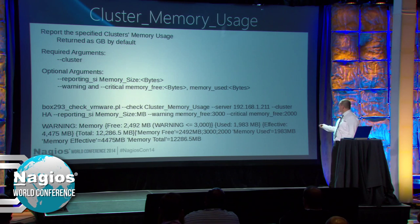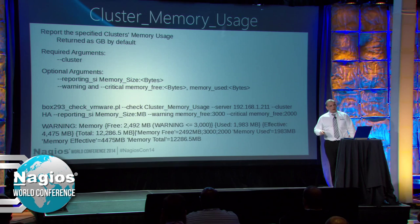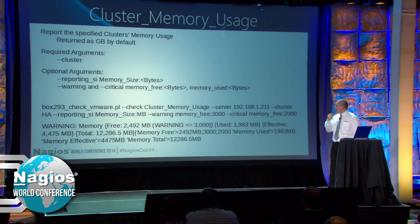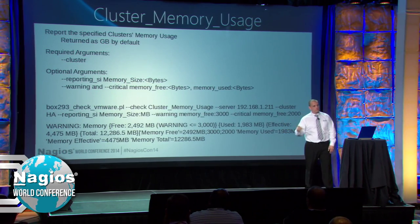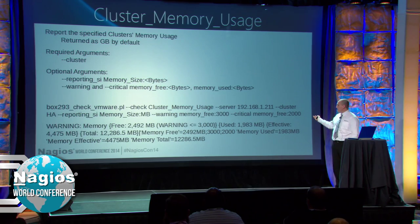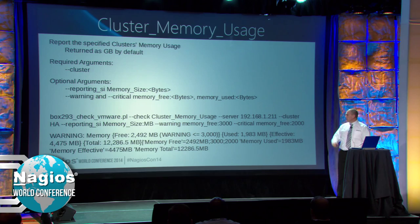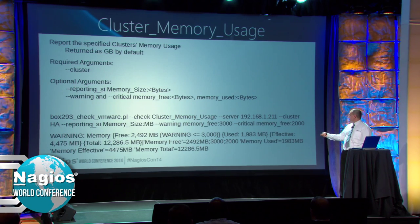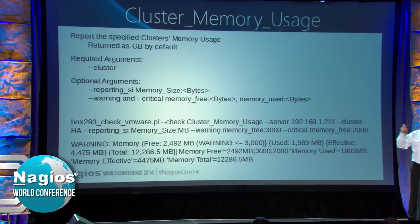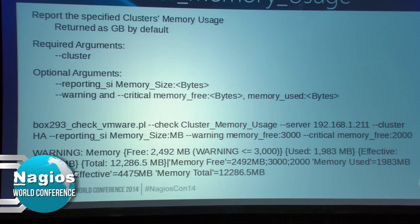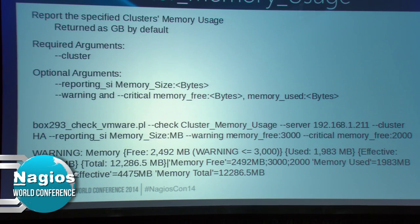Cluster memory usage - this one gathers all the hosts in the cluster and calculates how much memory is being used. If it's a HA cluster, the high availability sets aside a certain amount of resources, so you have an effective amount, a total amount, and what the free amount is. The total amount here is 12 gig but I have an effective amount of four and a half gigs. All of this is in performance metrics as well. So you can see when you add an extra host to the cluster, you will see a big jump in resources now available.